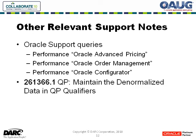There are some additional notes and ways to find pricing improvement information within support. Just some general queries that you can do: if you put in "performance" and then within quotes, "Oracle Advanced Pricing" or "Oracle Order Management" or "Oracle Configurator," you'll get on the very first page a quick list of the types of things you need to look at.